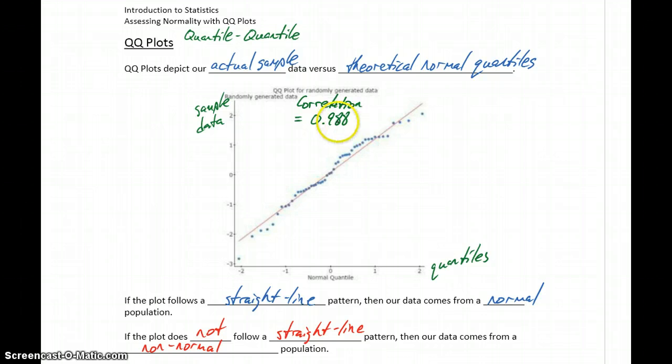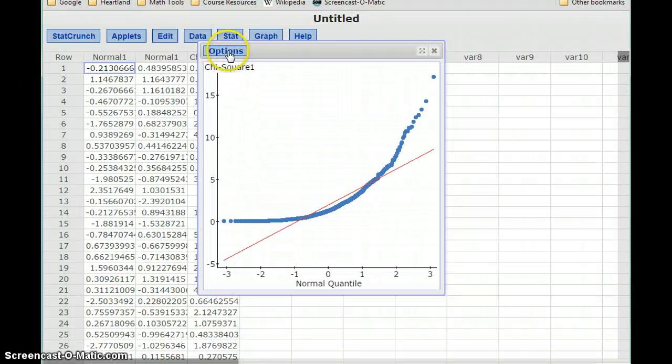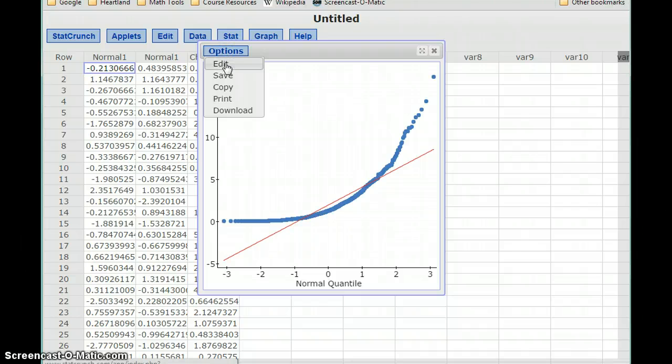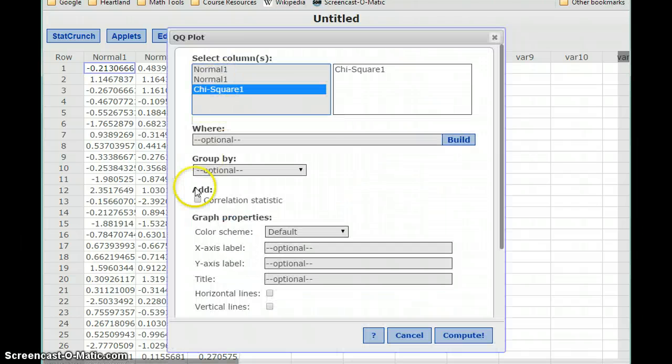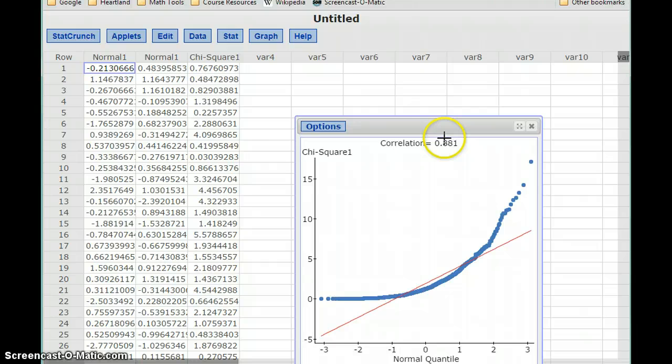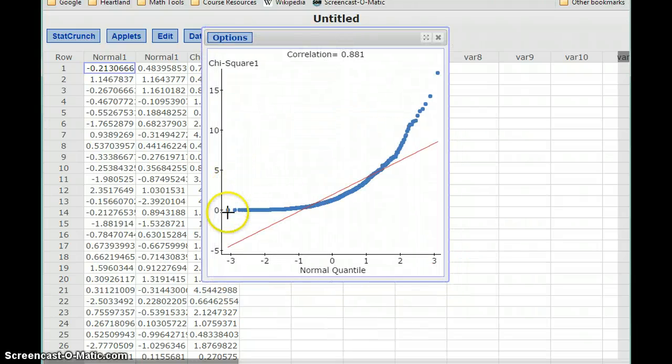If we flip back over to StatCrunch and look at this data that came from a non-normal distribution, we can select Options and Edit to go back to that menu, and we'll add a correlation statistic. So in the graph that I already had on the notes, we had a correlation of 0.988, so very close to 1. Here we have something that's not a very good fit for this straight line pattern, and we have a correlation of 0.881.